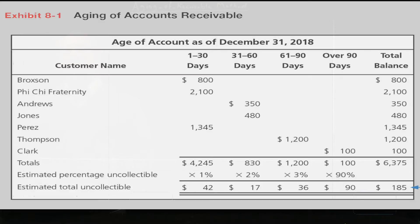And then over 90 days, we started to give up waiting. We started to feel that it's most probably not going to be paid. So we gave a very high percentage, 90% of expected uncollectible amounts. So 90% multiplied by $100, that would be $90 that we think is not going to be collected. So add all these totals, 90 plus 36 plus 17 plus 42, we get 185. 185 is the ending balance of AFDA.